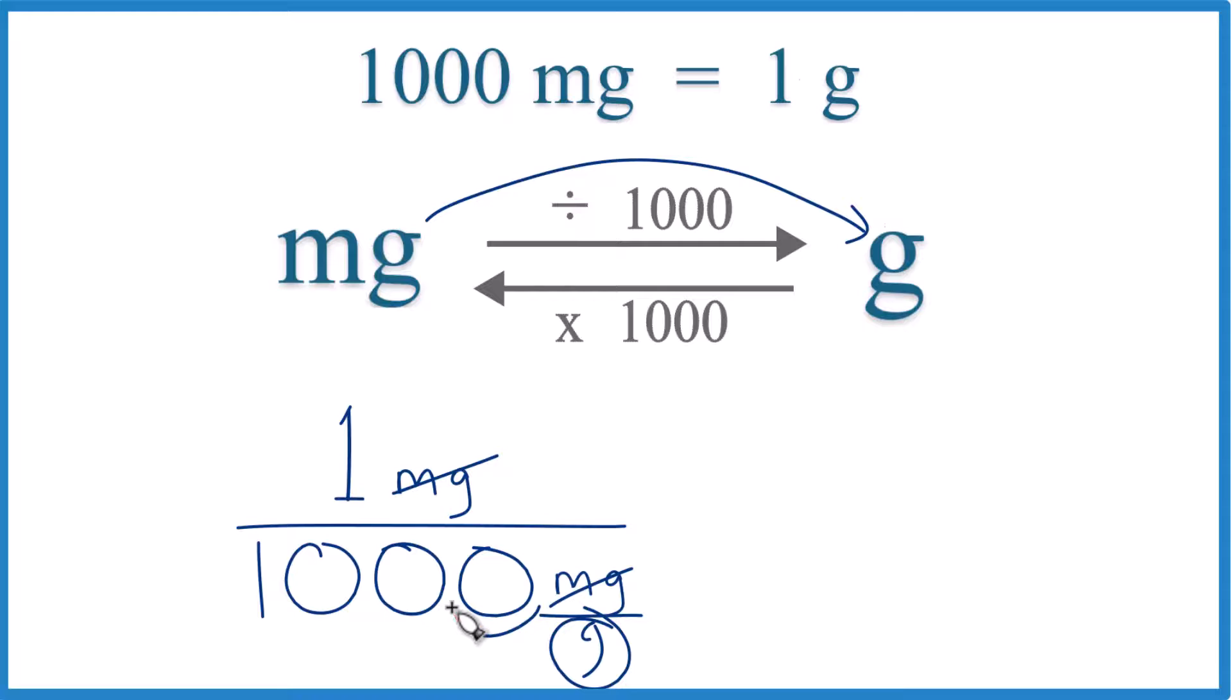So let's move our decimal point 1, 2, 3. Now we're just dividing by 1. And up here, 1, 2, 3, and put zeros in. And we end up with 1 milligram is 0.001 grams, like this.